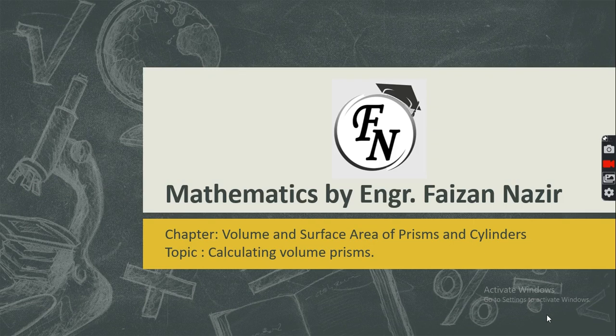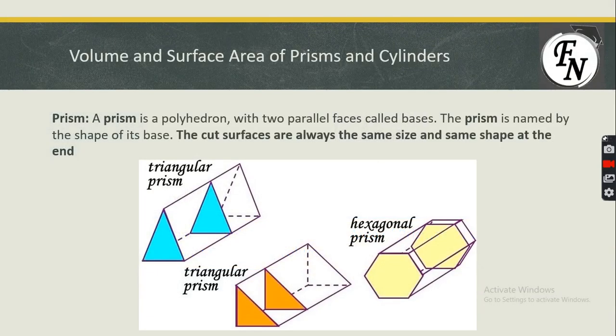First, we will talk about what prisms are. Prisms are any three-dimensional shape, but if we have a particular consistent shape at its base, it is known as a prism. By definition, a prism is a polyhedron with two parallel faces called bases. The prism is named by the shape of its base, and the cross-sections are always the same size and shape throughout.